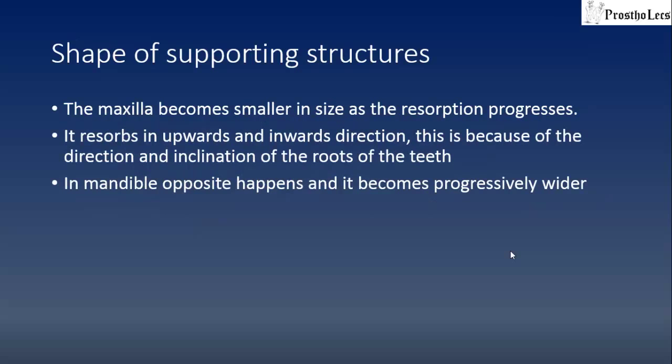Shape of the supporting structures: the maxilla becomes smaller in size as resorption progresses, resorbing in an upward and inward direction. This is because of the direction and inclination of the roots of the teeth. In the mandible, the opposite happens and it becomes progressively wider.